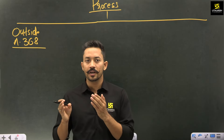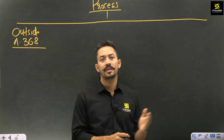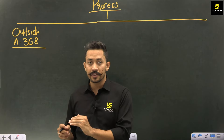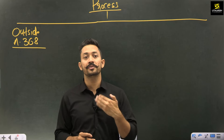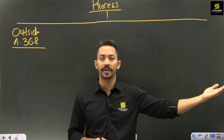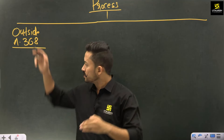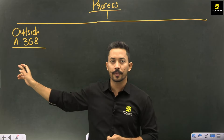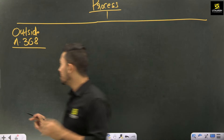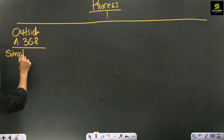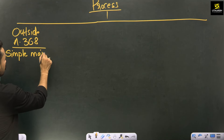Some provisions can be changed even without using Article 368. This means they are the easiest features to change because using Article 368 involves a certain degree of difficulty. Those provisions which can be changed without using Article 368 are the simplest to amend — they can be changed only by way of simple majority.